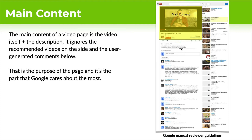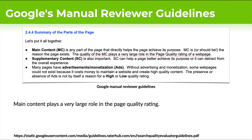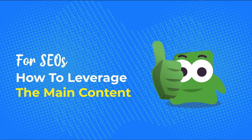In the manual reviewer guidelines, they say that the quality of the main content plays a very large role in the page quality rating. Essentially, main content plays a very large role in how Google is going to evaluate your page and ultimately rank it online. Let's dive into what this means for SEOs and how you could actually leverage this to do better SEO, rank better on Google, and just get better results.